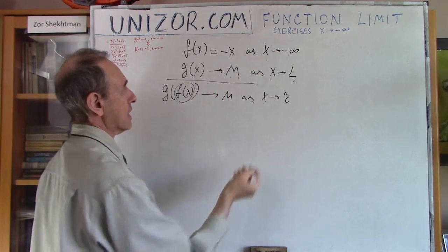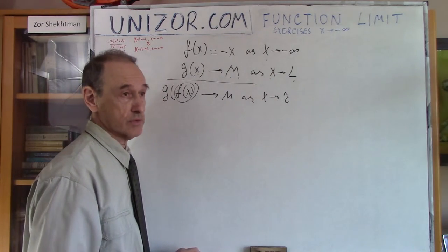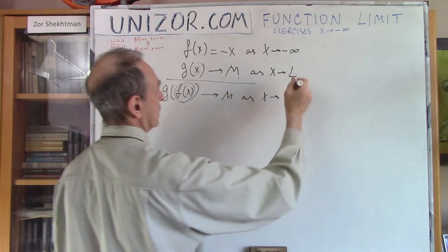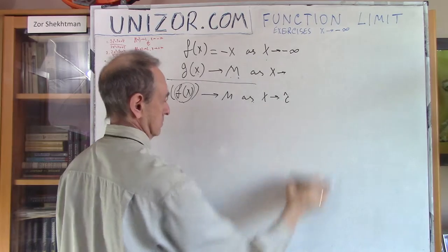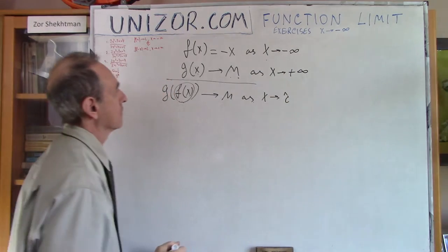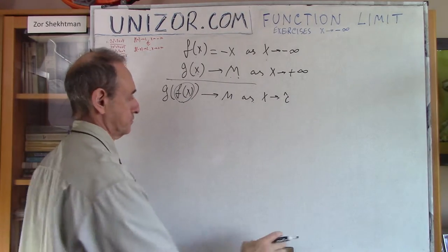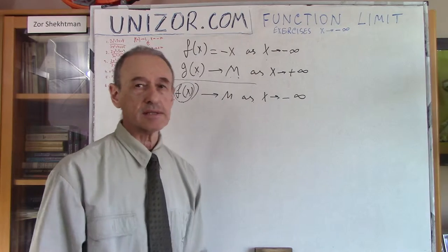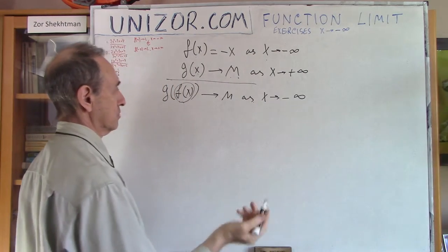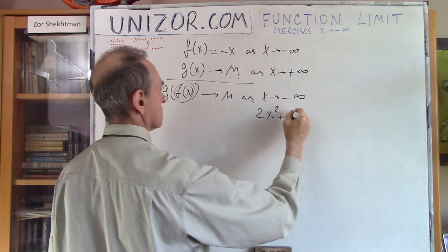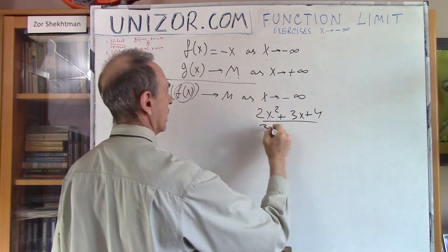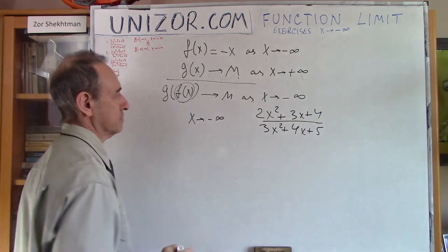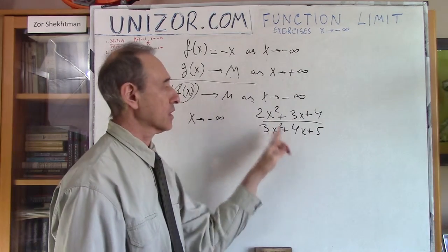What happens with the function minus x is: if x goes to minus infinity, to negative infinity, it obviously goes to positive infinity. So L is equal to positive infinity now. R is negative infinity. My examples are exactly the same as in the previous lecture. The first one is (2x²+3x+4)/(3x²+4x+5) as x goes to negative infinity.